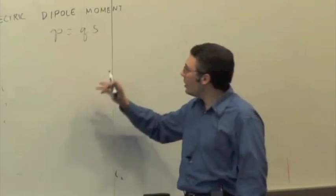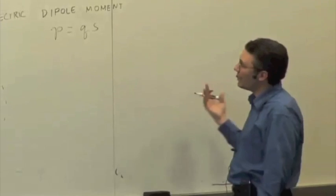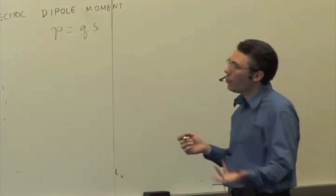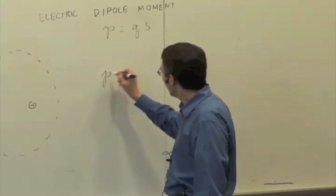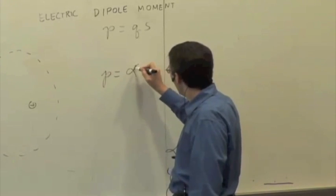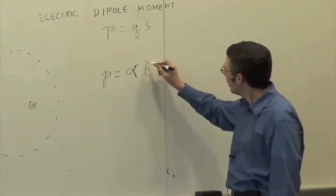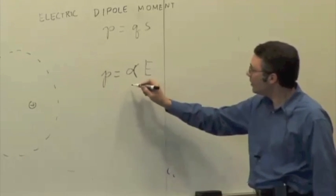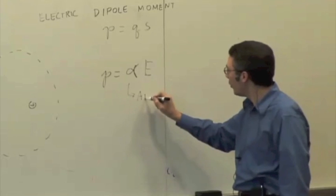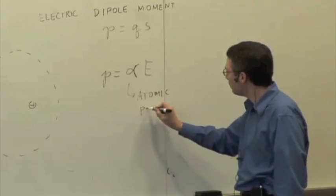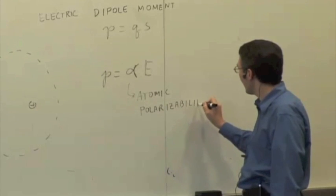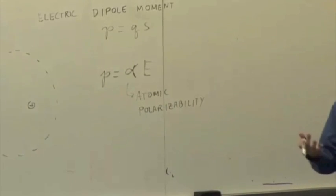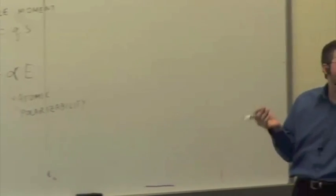So that dipole moment here, the strength of the dipole, in ordinary matter, or usual insulators, can be parameterized with this quantity called alpha. This is the atomic polarizability. It's just telling you the extent to which a neutral atom becomes a dipole when there's an electric field applied to it.